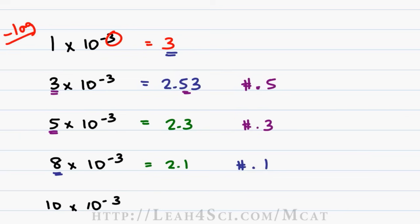And obviously if we add in 10 times 10 to the minus 3 which is the same thing as saying 1 times 10 to the minus 2, our answer is going to be 2. So here's the pattern to recognize: 3 starts with a 5, that's like your halfway point and then we go down to 3, down to 1 and we're at the lower number.